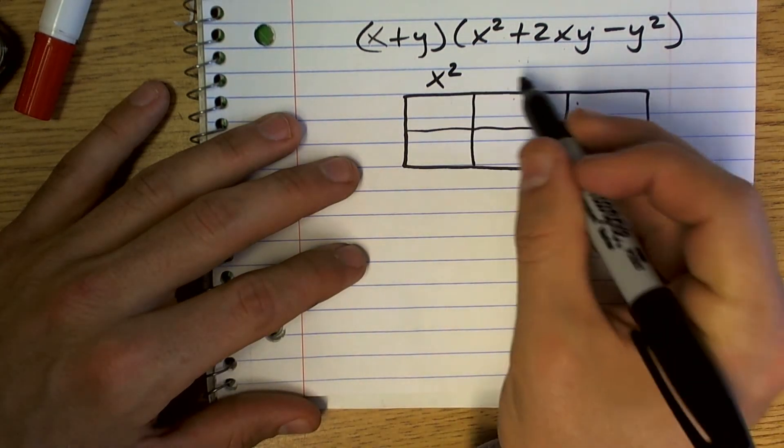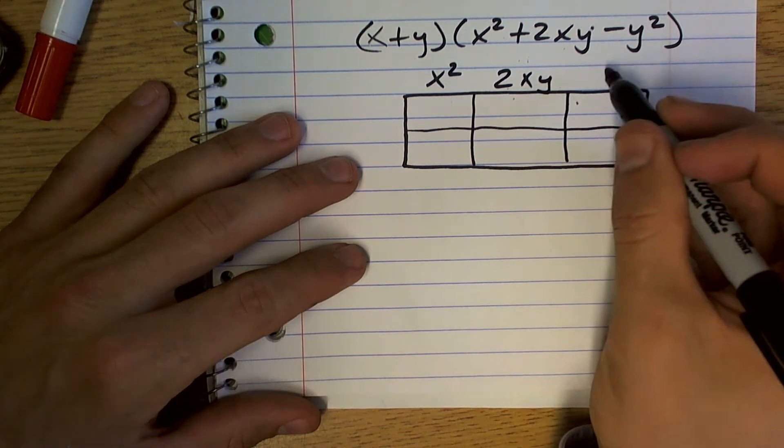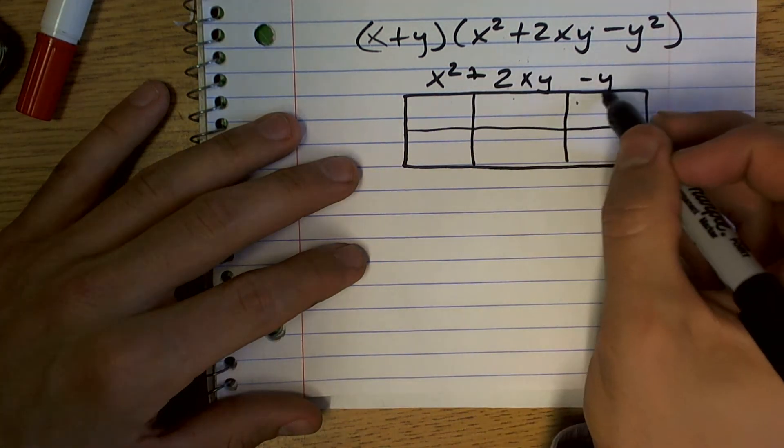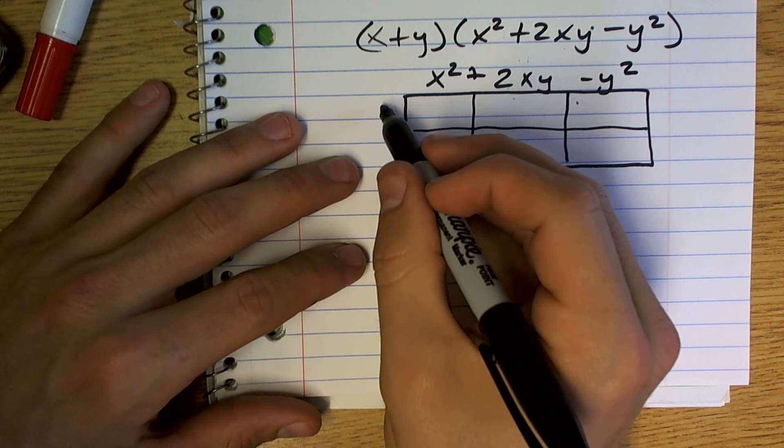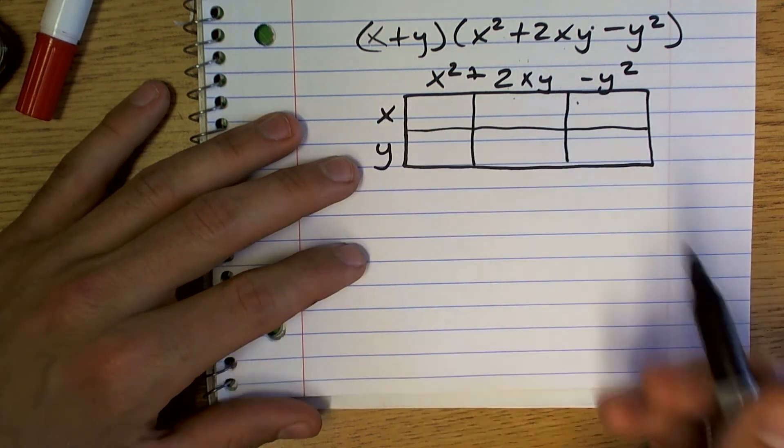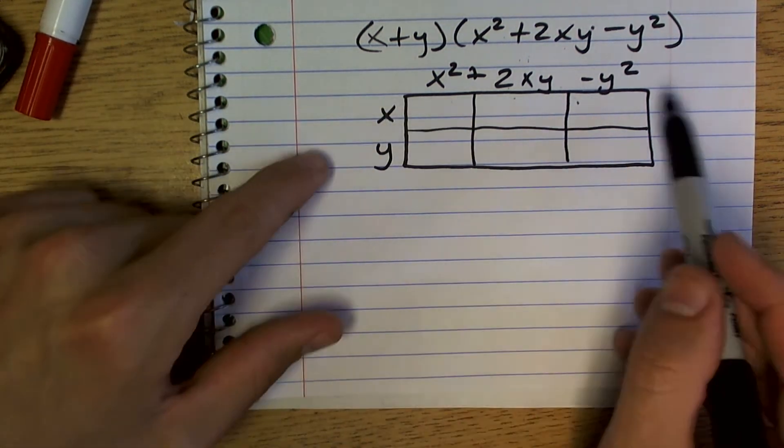And what you do is you just put each part there. x, and that's a positive y right there. So you put one side in there and the other side here.